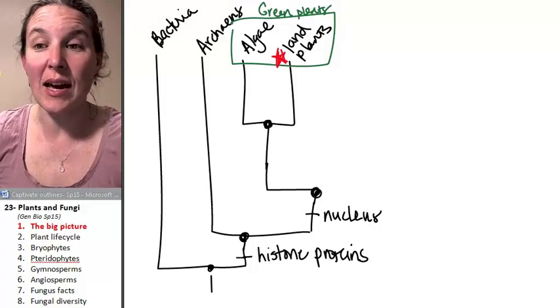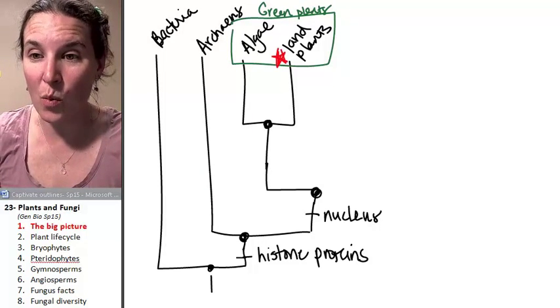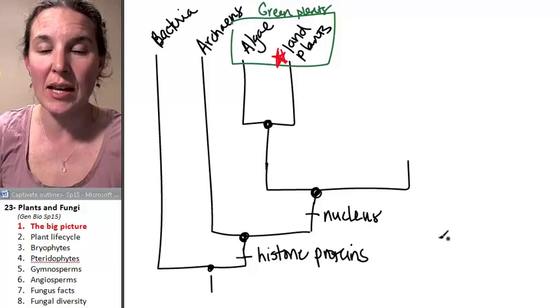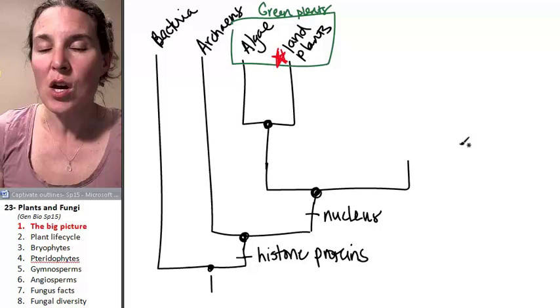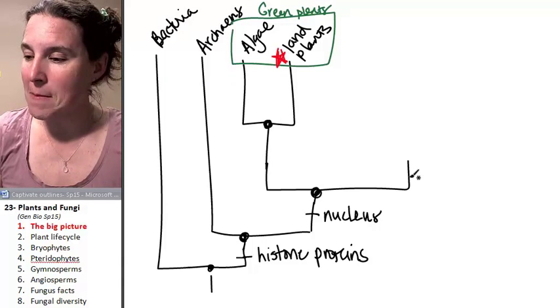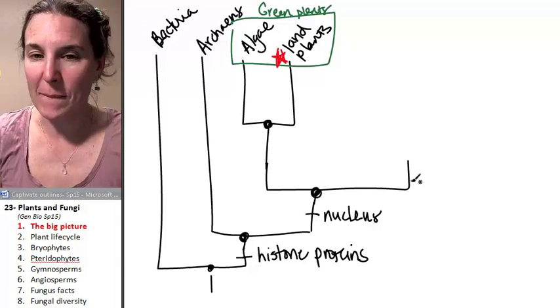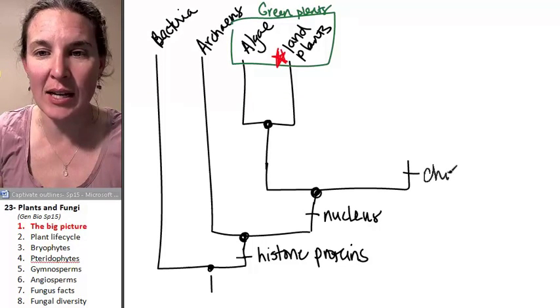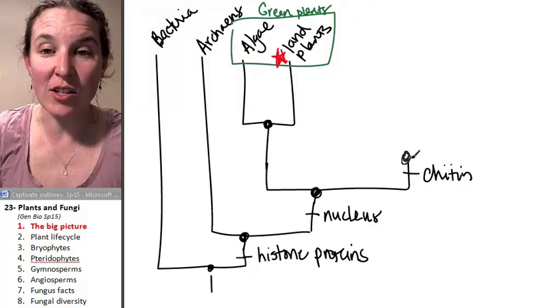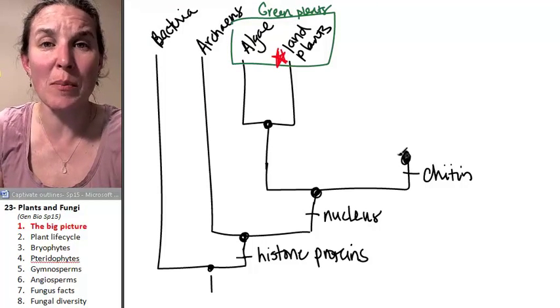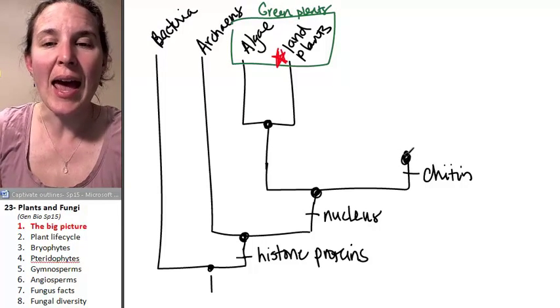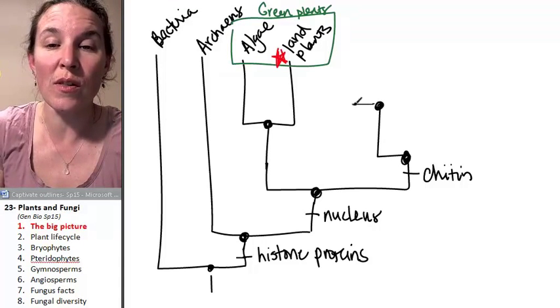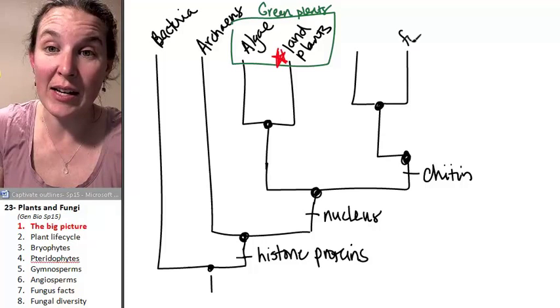But before we go into that, let's remind ourselves of where the algae, or where the animals and fungi come into this mix. So remember that we have histone, probably got the nucleus. So the next thing we got was chitin. So this ancestor had made use of the biomolecule chitin, and that ancestor gave rise to the fungi group. And we're going to talk about fungi today.